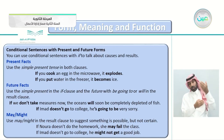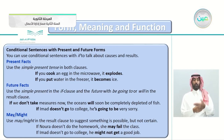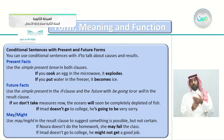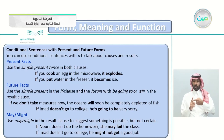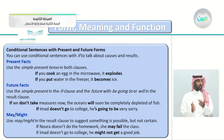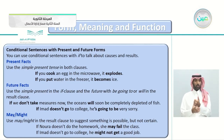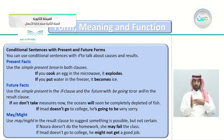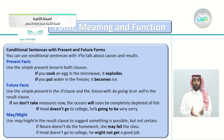For future facts — what will happen in the future — we use the simple present in the if-clause and 'will' or 'be going to' in the result clause. For example: 'If we don't take measures now, the oceans will soon be completely depleted of fish.' Another example: 'If Imad doesn't go to college, he is going to be very sorry.' The if-clause uses simple present, and the result clause uses 'will' or 'going to.'